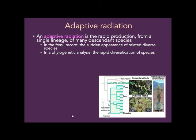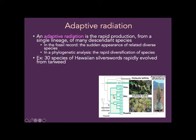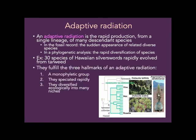An adaptive radiation is the rapid production from a single lineage of many descendant species — you've got one species and then suddenly you have lots. In the fossil record this appears as nothing, nothing, nothing, and then lots of different species in a lineage. In phylogenetic analysis, this is when you see a tree with rapid diversification — even so rapid that you may end up with a polytomy because you can't figure out which splits occurred first.